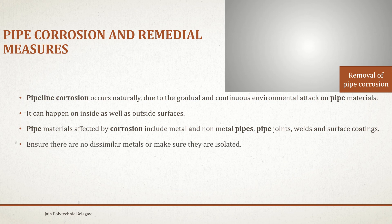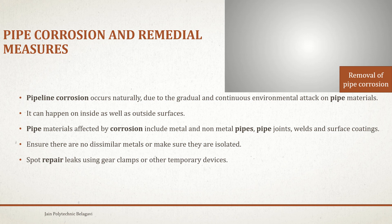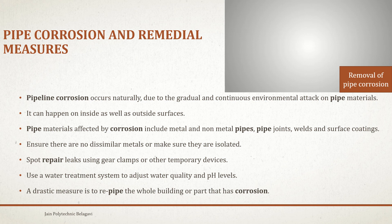Remedial measures include: ensuring there are no dissimilar metals in contact, or making sure they are isolated; spot repairing leaks using gear clamps or other temporary devices; using a water treatment system to adjust water quality and pH values. A drastic measure is to repipe the whole building or the part that has corrosion.